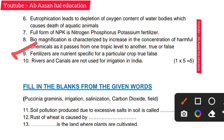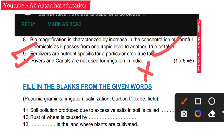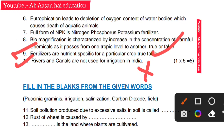Ninth: fertilizers are nutrient-specific for a particular crop — that is true, correct answer. Tenth: rivers and canals are not used for irrigation in India — that is false. Rivers and canals are indeed used for irrigation in India.